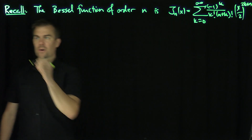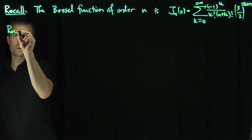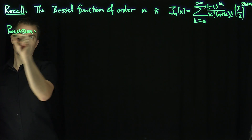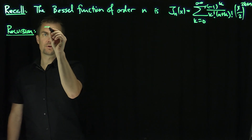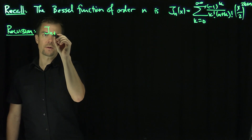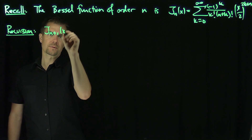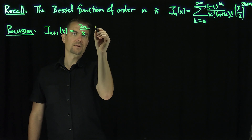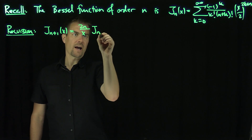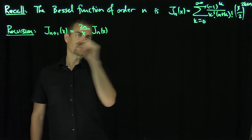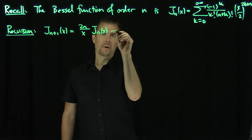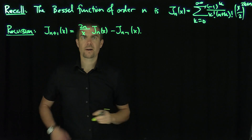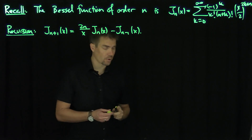Now we claim our recursion relationship: J_{n+1}(x) is equal to (2n/x) J_n(x) minus J_{n-1}(x). So how do we prove this recursion?